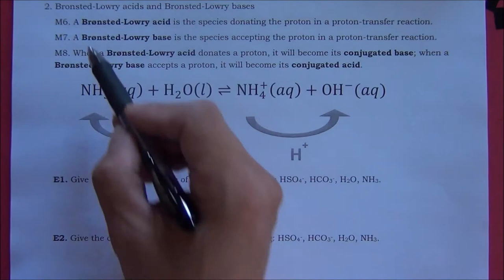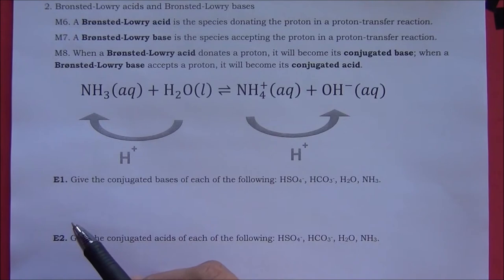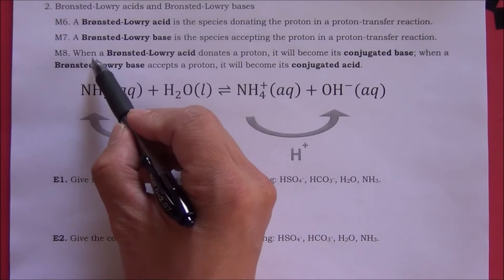As we can see here, a Brønsted-Lowry acid and a Brønsted-Lowry base are related together. They always appear at the same time — one is donating the proton and one is accepting the proton.